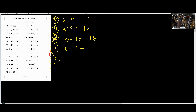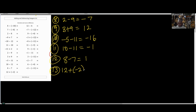Number 12: 8 minus 7. This is just normal subtraction — you have 8, you take away 7, you have 1. Number 13: they have put a bracket there to confuse us. That is 12 plus a bracket of negative 2. Remember what I wrote at the top — minus times plus is minus. So this is going to be 12 minus 2, and what is 12 minus 2? Take away 2 from 12 — that's 10.